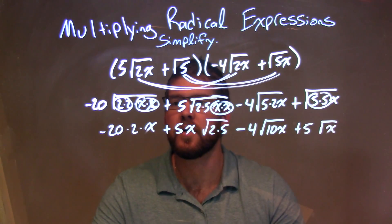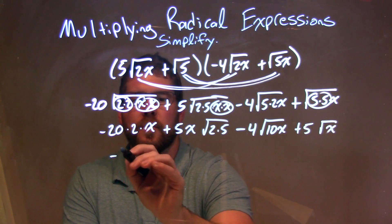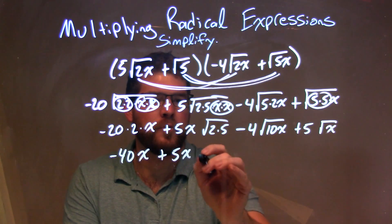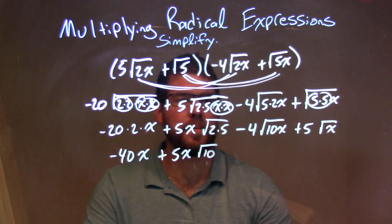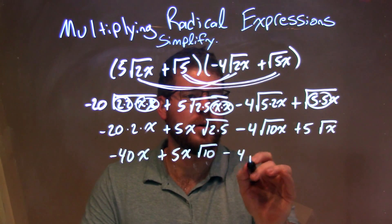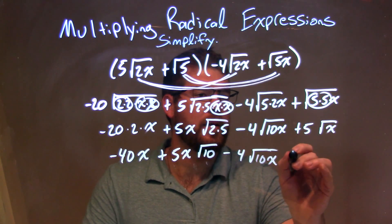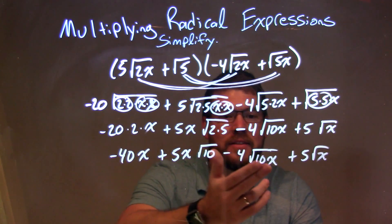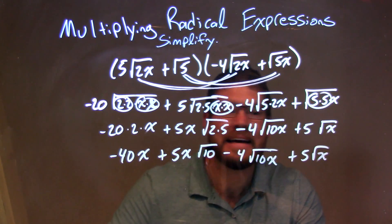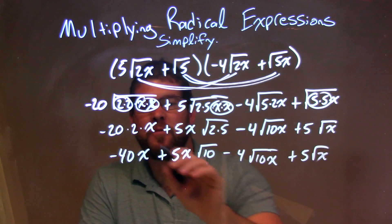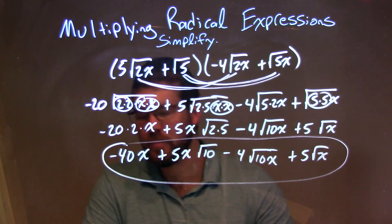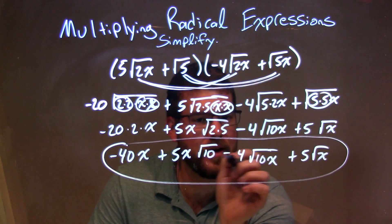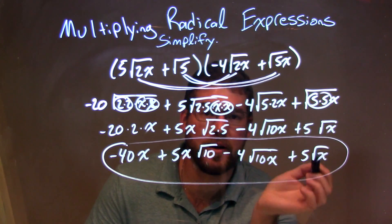Let's tidy this up. Negative 20 times 2 is minus 40, so we have minus 40x, plus 5x times the square root of 10 — since 2 times 5 is 10 — minus 4 square root of 10x, plus 5 square root of x. Looking for like square roots, there are none that match, so our final answer is: minus 40x plus 5x square root of 10 minus 4 square root of 10x plus 5 square root of x.